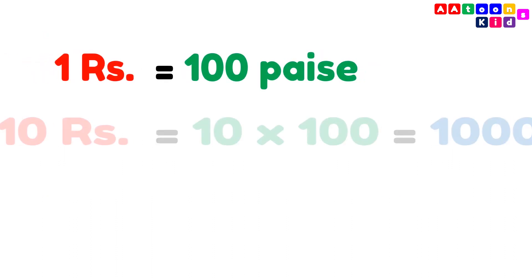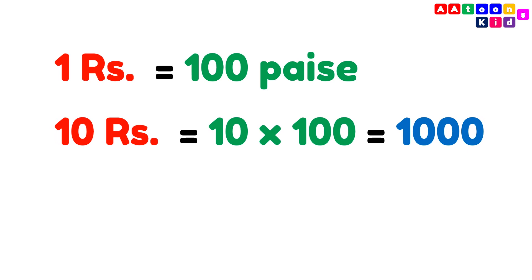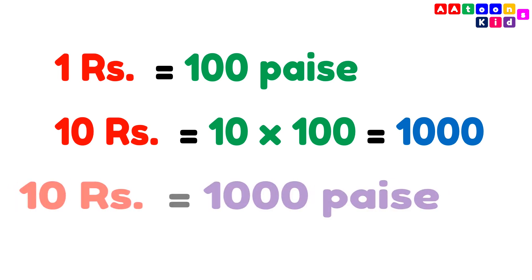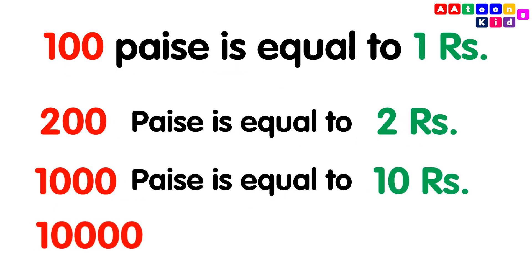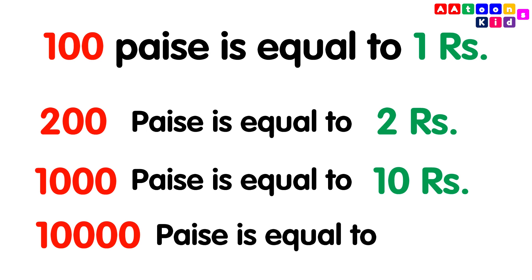1000 paise is equal to 10 rupees. 1 rupee is equal to 100 paise, so 10 rupees is equal to 10 multiplied by 100, which equals 1000. So 10 rupees is equal to 1000 paise. 10000 paise is equal to 100 rupees.